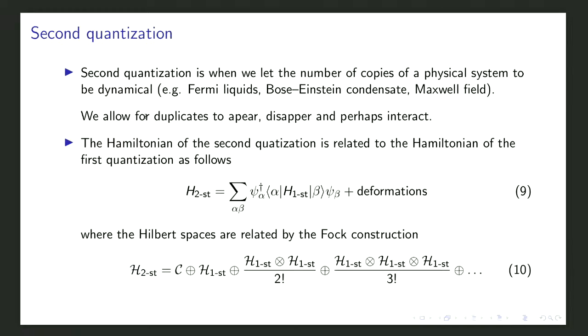Second quantization is when you let the number of copies of a physical system become dynamical. Examples include Fermi liquids, Bose-Einstein condensates, and the Maxwell field — duplicates can appear, disappear, and interact. The Hamiltonian of the second quantization is related to that of the first quantization by equation nine, which imposes constraints: there will be deformations that cannot be written this way and cannot be absorbed by redefinitions of the first-quantized Hamiltonian.